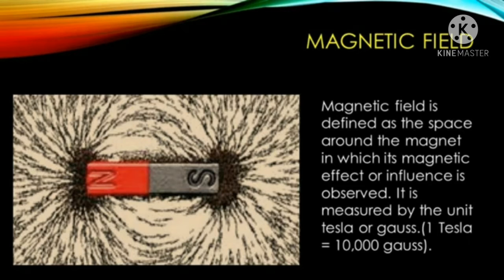Magnetic field is defined as the space around a magnet in which its magnetic effect or influence is observed. Magnetic field is measured by the unit Tesla or Gauss. One Tesla is equal to 10,000 Gauss.